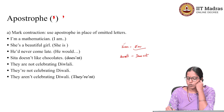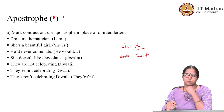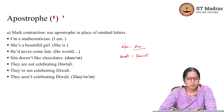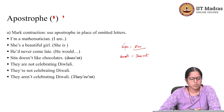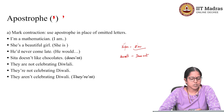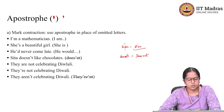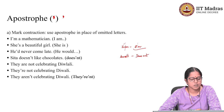In 'doesn't,' the letter O is omitted and in its place you have an apostrophe. In 'I'm,' the letter A is omitted and in its place you have an apostrophe. So you use an apostrophe in place of omitted letters. Examples: instead of 'I am a mathematician,' you could say 'I'm a mathematician.' Instead of 'she is a beautiful girl,' you could say 'she's a beautiful girl.' Instead of 'he would never come late,' you could say 'he'd never come late.' Instead of 'Sita does not like chocolates,' you could say 'Sita doesn't like chocolates.'